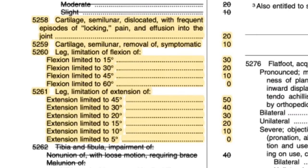The really important ratings are 5260 for flexion and 5261 for extension. You can get up to a 30% rating on flexion, but you have to be pretty limited. For extension, there are six rating levels and you can get up to a 50% rating — basically meaning you can't straighten your knee.